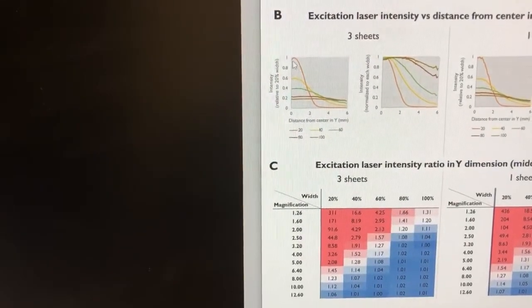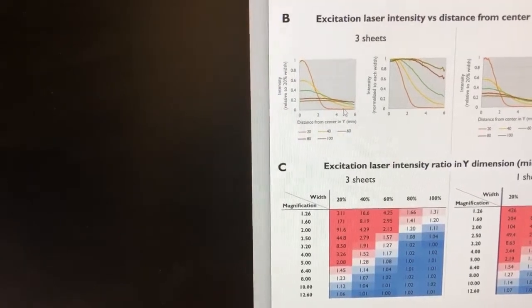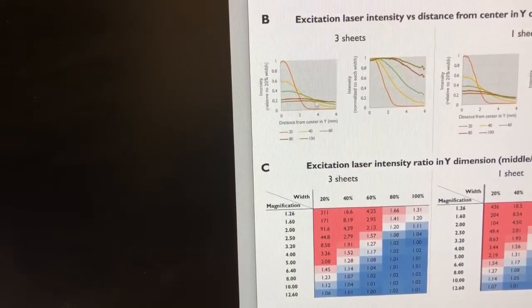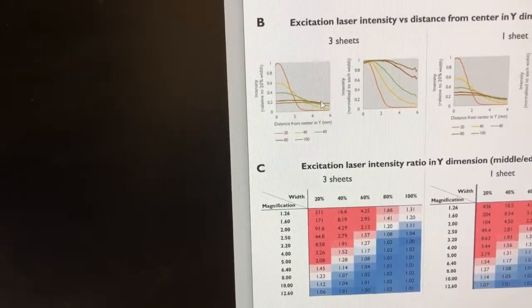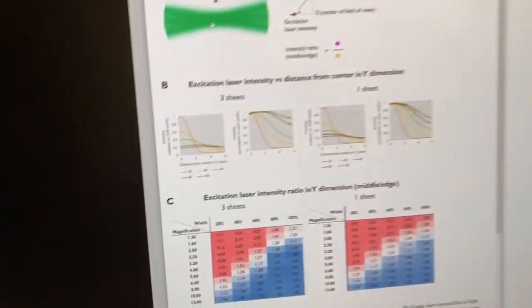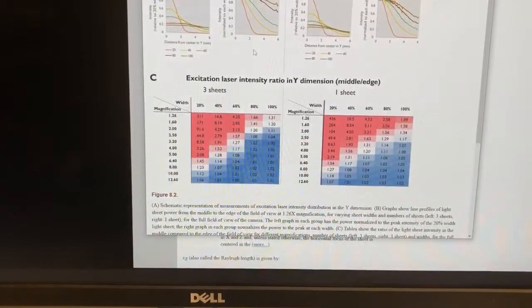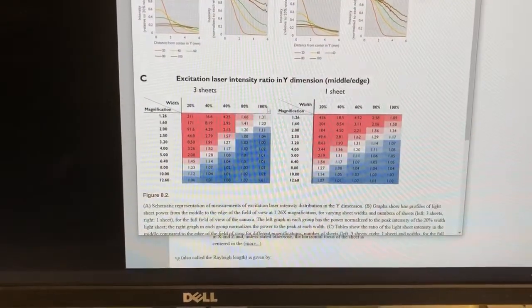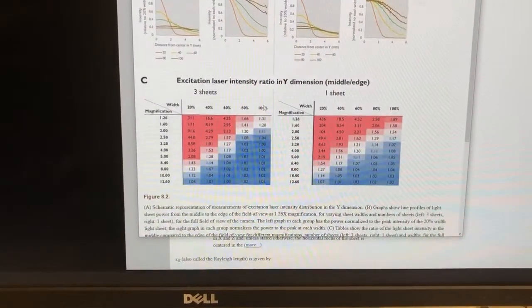And so you can see if the width is low, it's very bright in the middle and then it sort of drops off. But if the width is 100, it's very even throughout. So essentially, if you're very zoomed in, you can get away with a lower width than 100% with still quite even illumination.